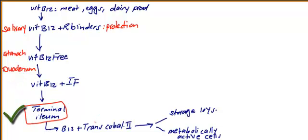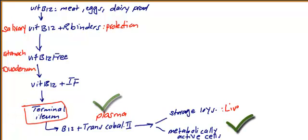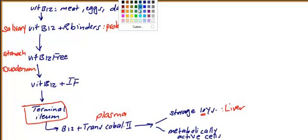So the second location is the duodenum, the third location is the terminal ileum, and finally, B12 and transcobalamin 2 is in the plasma — in the blood. From the blood, it goes to storage, which is basically the liver, usually for 10 years, or to metabolically active cells. Now, what are the processes responsible for B12 metabolism in each organ?